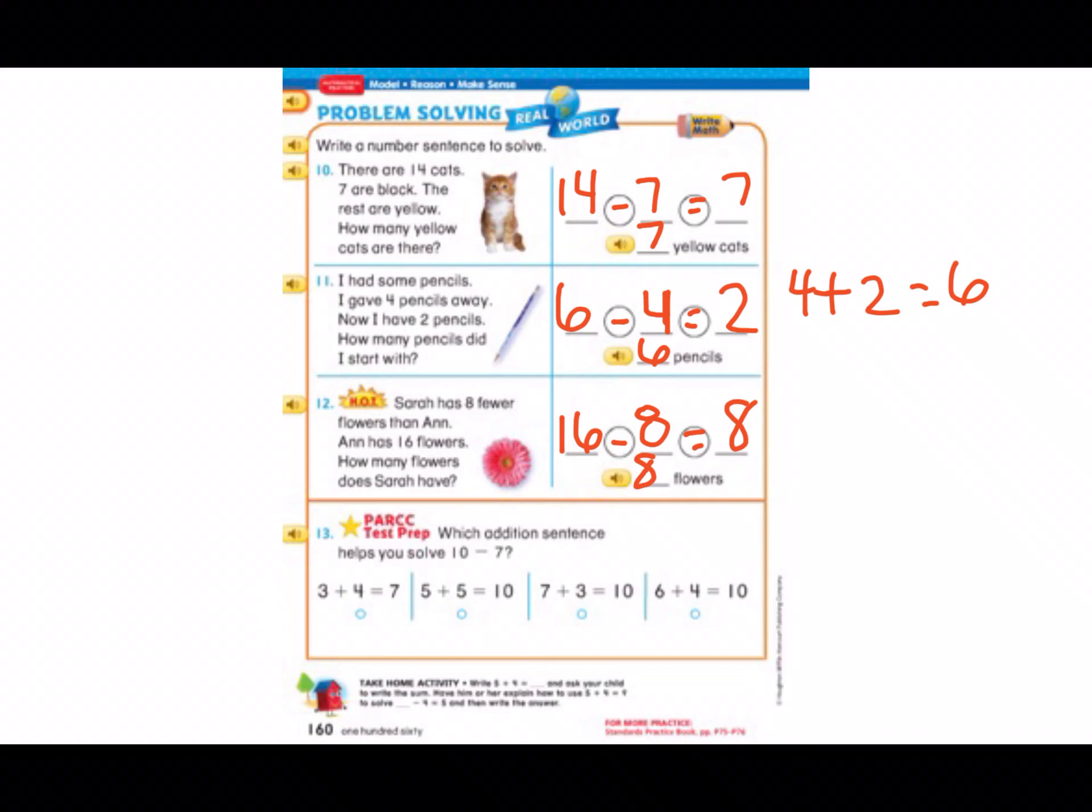Number 13. Which addition sentence helps you solve 10 minus 7? So you need to see 10 and 7 in your sentence. 3 plus 4 equals 7. Do you see the number 10 and the number 7? No, me neither, so I'm going to cross it out. What about 5 plus 5 equals 10? No, me neither. What about 7 plus 3 equals 10? Oh, I heard a 7 and I heard a 10, but let's check our last answer just in case.